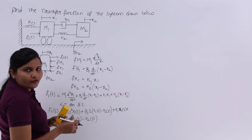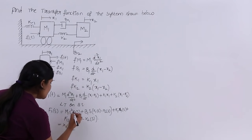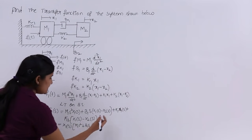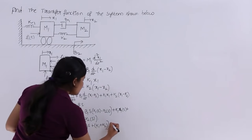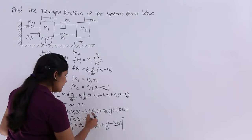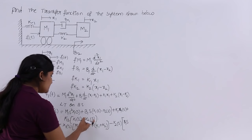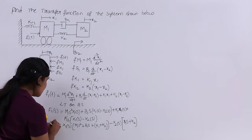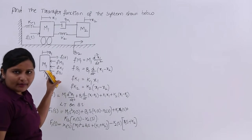Separating X1(s) and X2(s) terms: F1(s) = X1(s)·[m1·s² + b1·s + k1 + k2] − X2(s)·[b1·s + k2]. This is the Laplace-transformed force equation for the free body of mass m1. Note that for double differentiation we write s², and for single differentiation we write s, using the differentiation property of the Laplace transform.